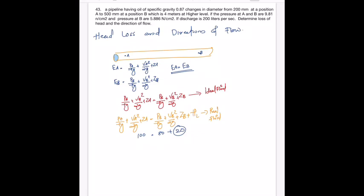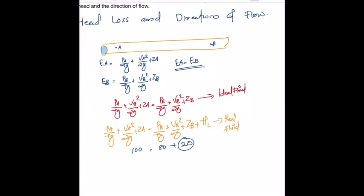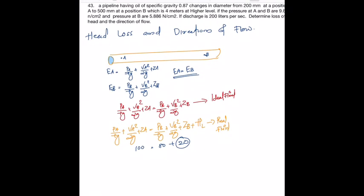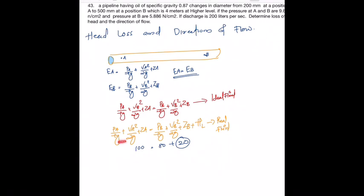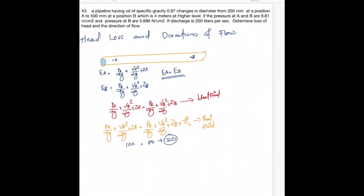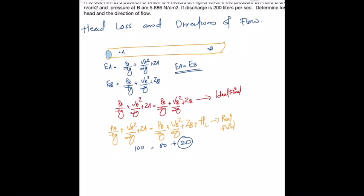If you take the ideal fluid equation there is no head loss term, so you will get stuck. Remember: if the question is to determine loss of head, you have to take this real fluid equation and consider the fluid as a real fluid. That's the first part. Then they have asked to find out the direction of flow.